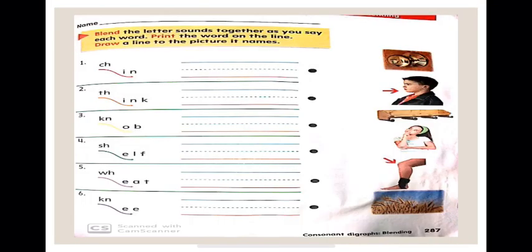In page 287, we have to blend the letters together, blend the sound of the letters together, and write it down on the line, then match. The first word, let's spell it out together, CH I-N, CHIN.